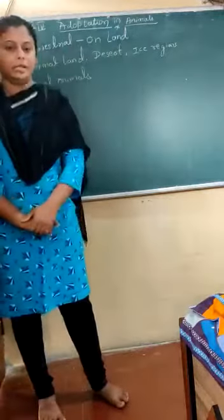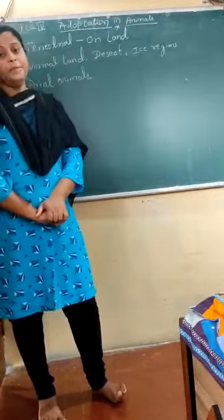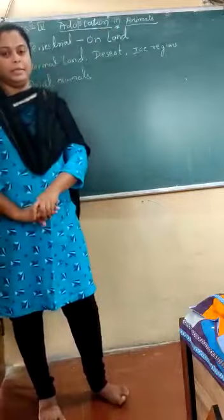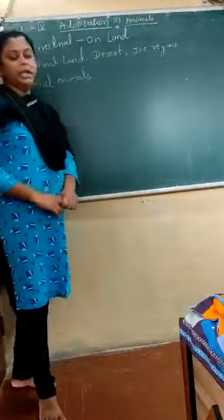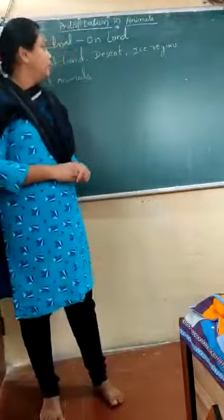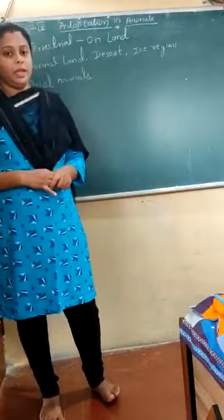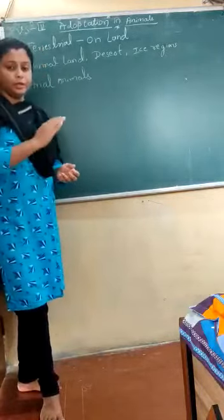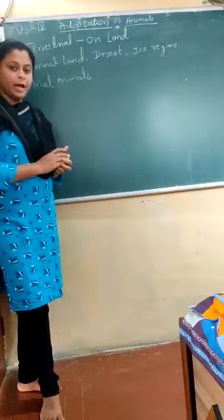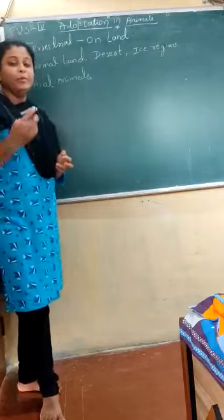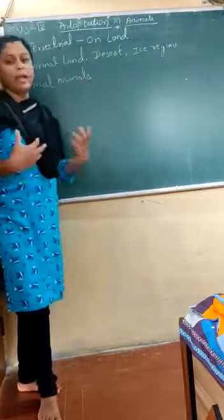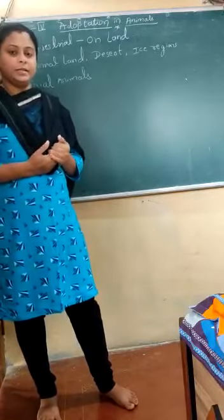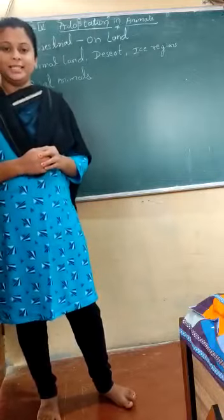This is how terrestrial animals have adapted themselves in different regions — normal land, desert, and ice regions. In the next video we will discuss aerial animals, aquatic animals, and more. Children, I hope you understood what we discussed today. Try to write down the terrestrial regions and describe how at least two animals have adapted themselves. Do this homework and we will discuss the next part in the next video. Take care, bye!